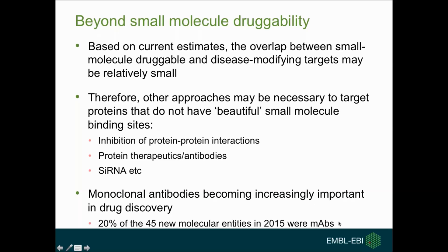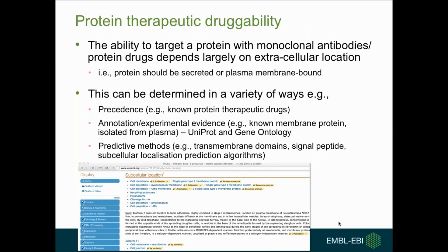The ability to target a protein with a monoclonal antibody largely depends on the extracellular location of the protein — it needs to be secreted or plasma membrane-bound to be accessible to a large molecule like an antibody. We can determine this using known protein therapeutic drugs, annotation and experimental evidence in resources like UniProt and the Gene Ontology, and predictions such as transmembrane domain or signal peptide identification and subcellular localisation prediction algorithms.